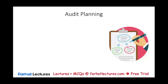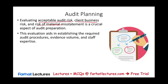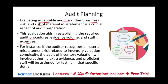To wrap up audit planning: evaluating these three risks — audit risk, client business risk, and risk of material misstatement — is crucial in audit preparation. This evaluation helps establish what audit procedures to use, how much evidence to collect, and what staff to send to the client: senior staff, more experts, specialists, or junior staff. For example, if the auditor recognizes a material misstatement risk in inventory valuation, they will gather more data and send specialized staff who know how to audit that inventory to test the account.